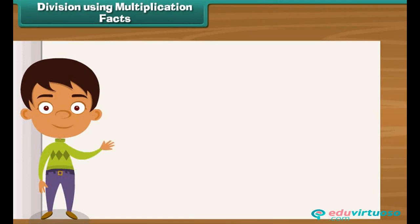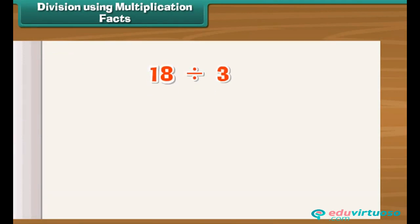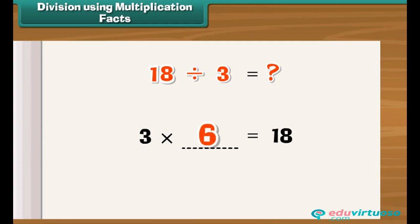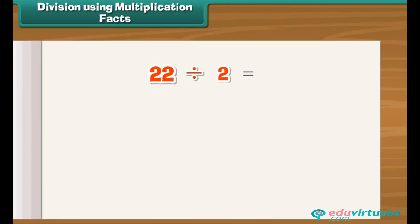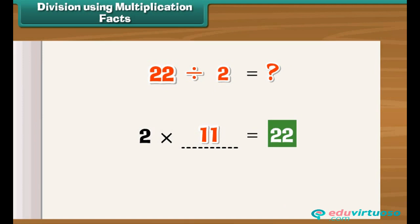Division using multiplication facts. Let us now divide numbers using multiplication facts. What is 18 divided by three? We know three multiplied by six is 18, so 18 divided by three is six. Similarly, 22 divided by two — we know two multiplied by 11 is 22, therefore 22 divided by two is 11.